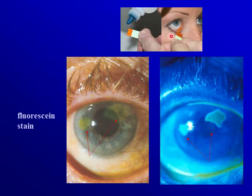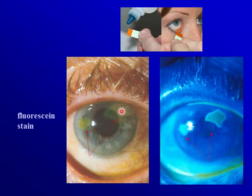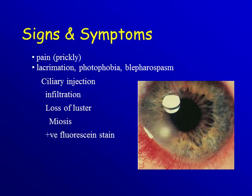Fluorescein is a dye supplied in paper form. We wet it and place it into the lower fornix, and the fluorescein stains the tears. If there is an area of epithelial defect, the fluorescein gets inside and mixes with the stroma. Using blue light, the area of defect becomes more apparent. So the signs and symptoms of a corneal ulcer are: aching pain, lacrimation, photophobia, blepharospasm, ciliary injection, infiltration, loss of lustre, miosis, and positive fluorescein stain.